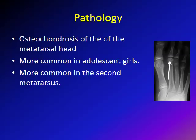Osteochondrosis is a group of disorders that affects the growth plate and the surrounding ossification center. It includes Köhler disease, Sever disease, and Osgood-Schlatter. We have separate videos for each of these conditions. Osteochondrosis basically means affection of the growth plate and the surrounding ossification center.